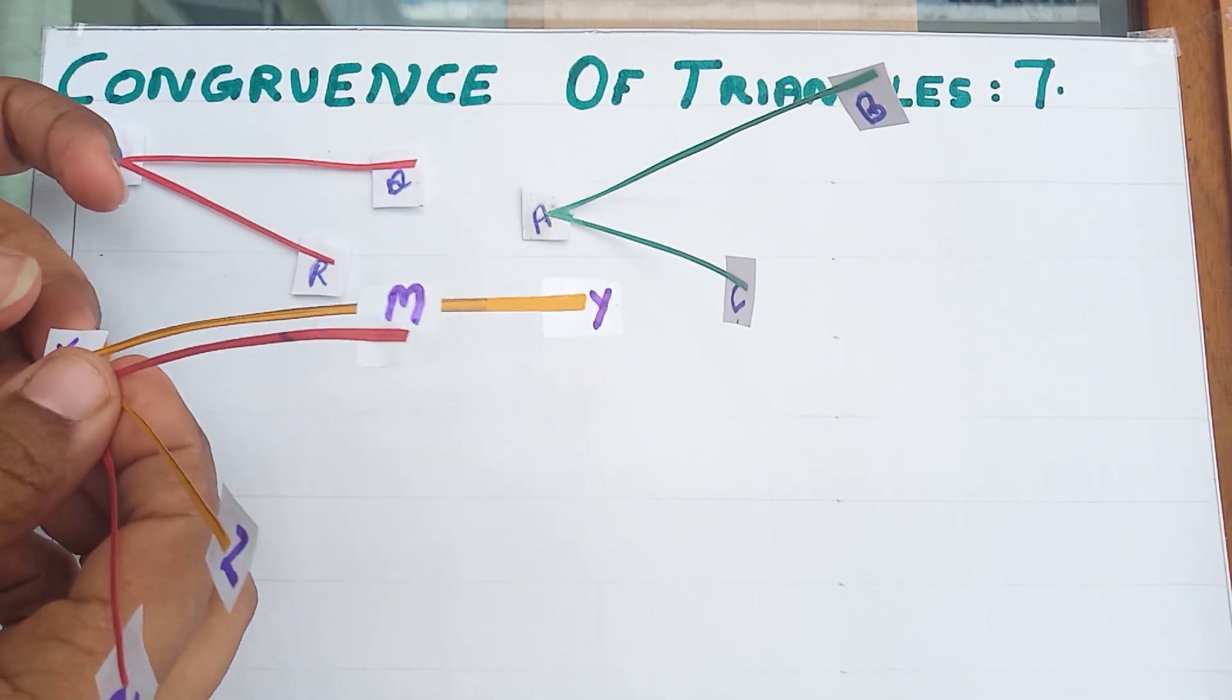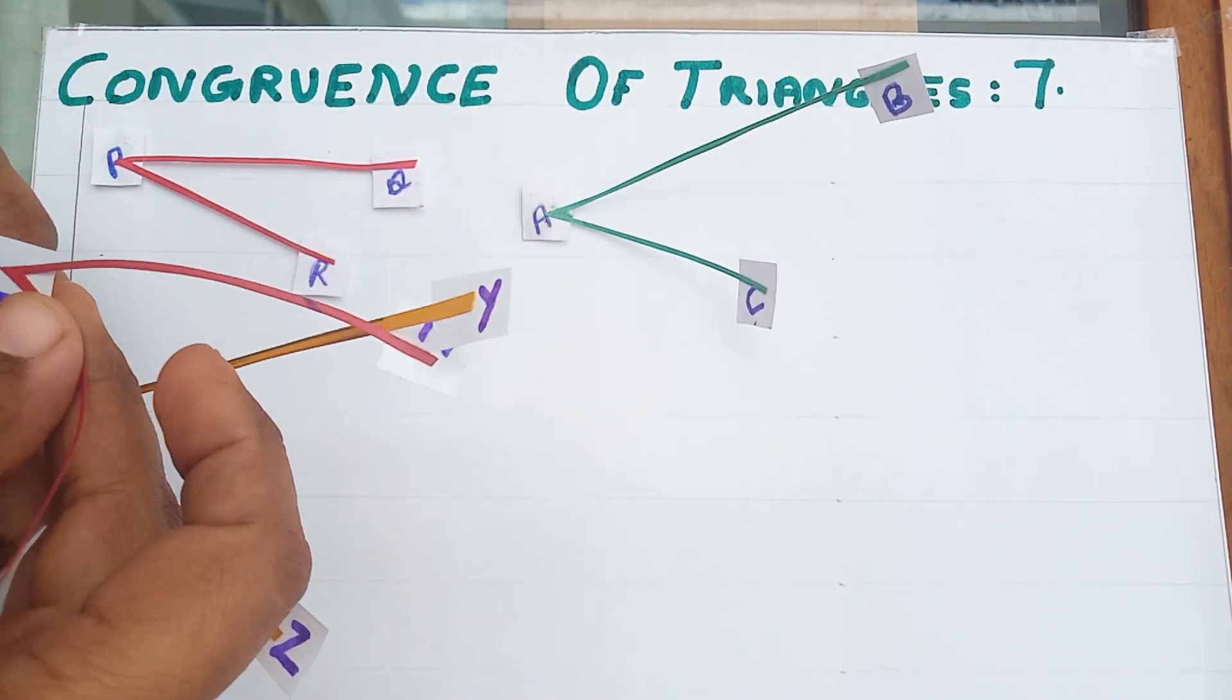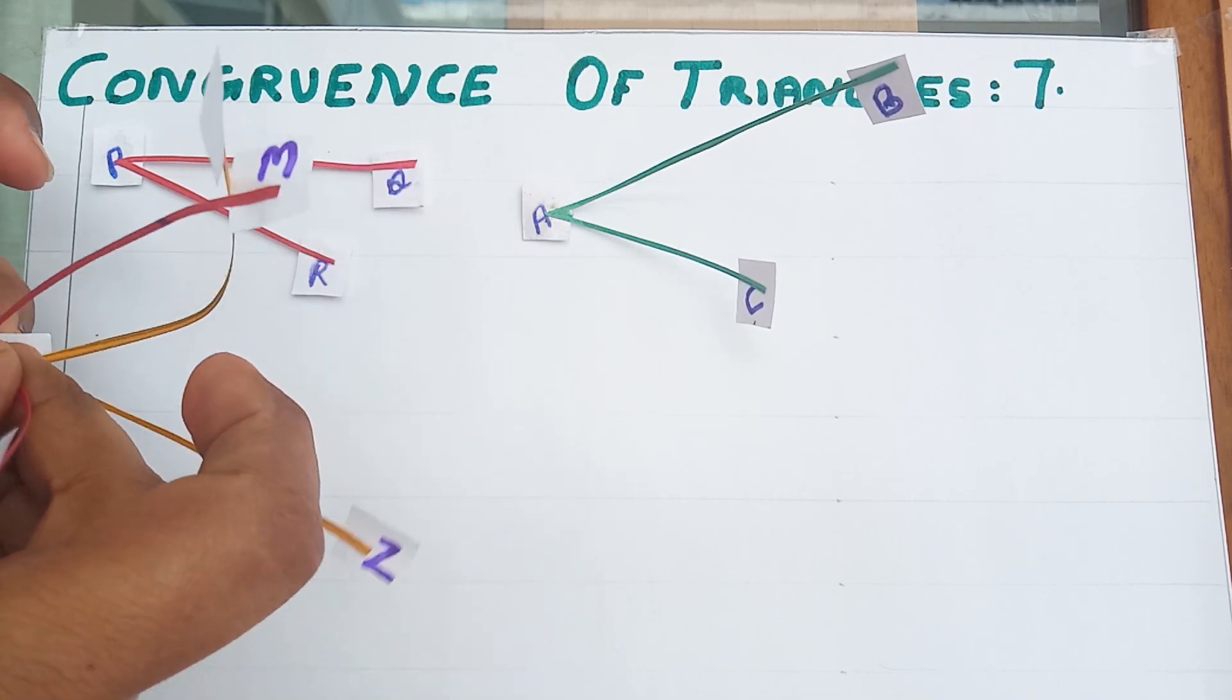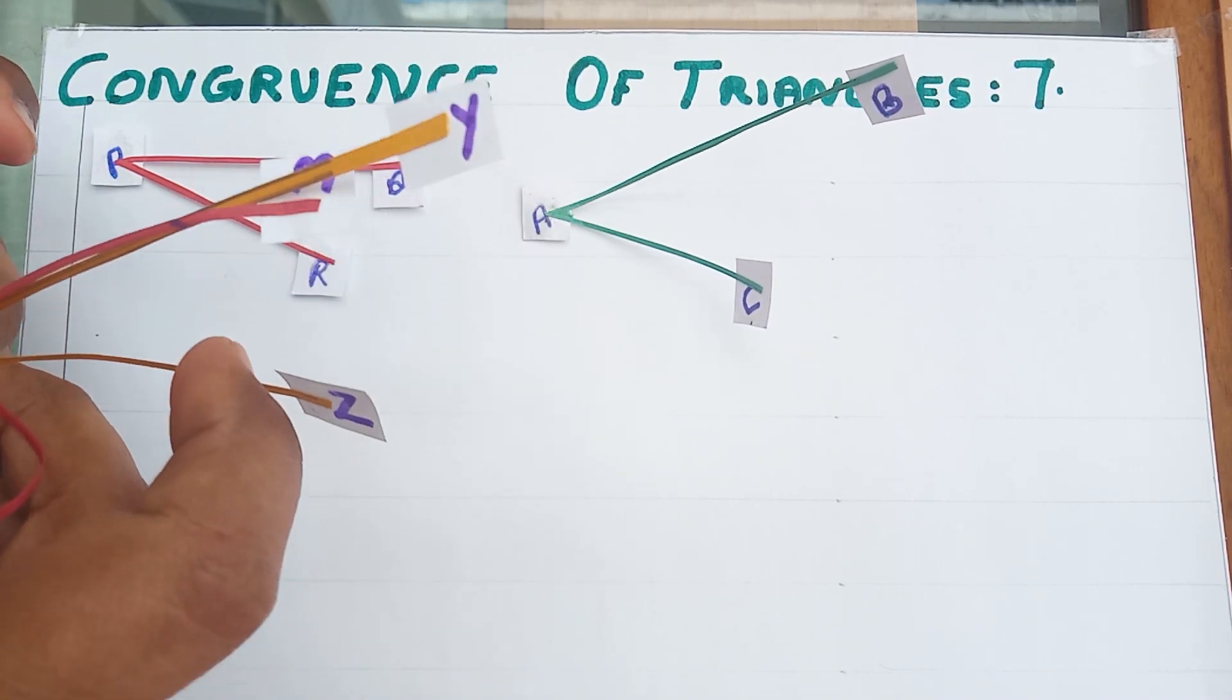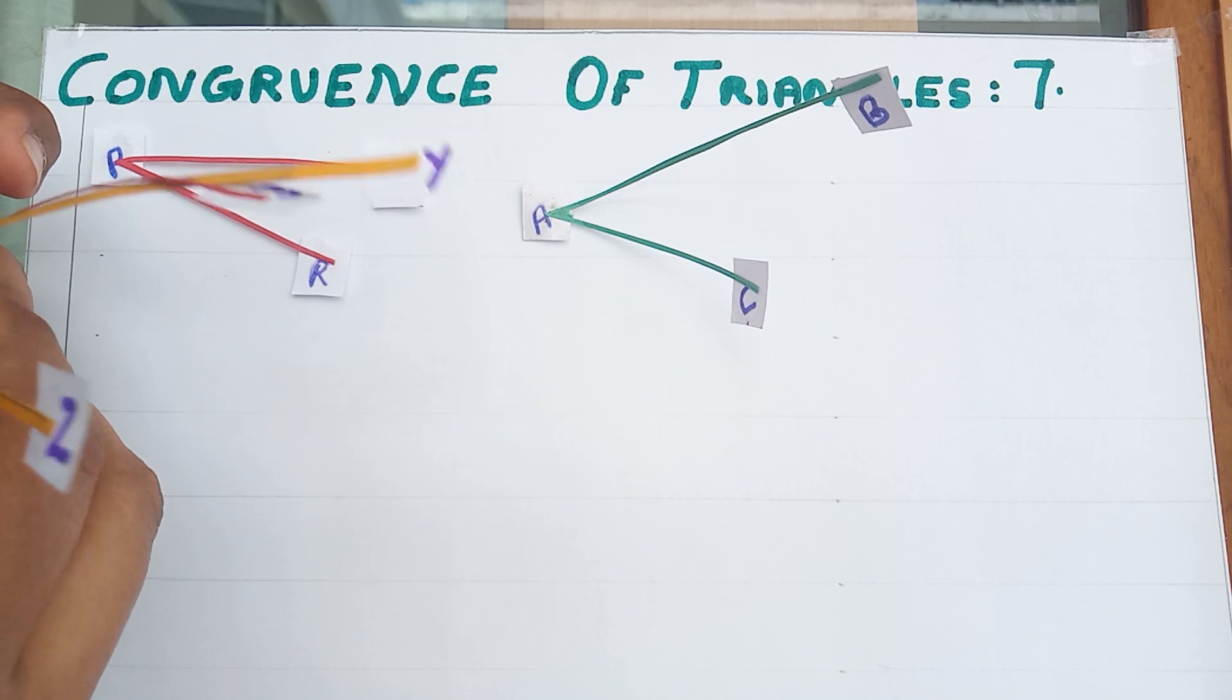See, what is the vertex of this angle? X. And what is the vertex of this angle? L. I am going to keep one vertex over the other. See.